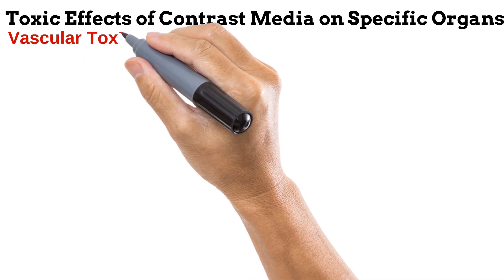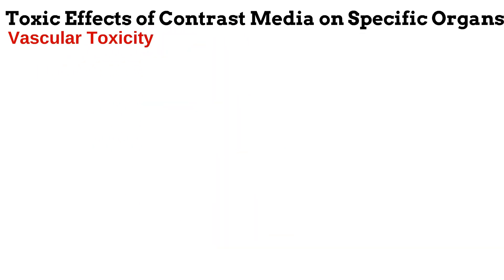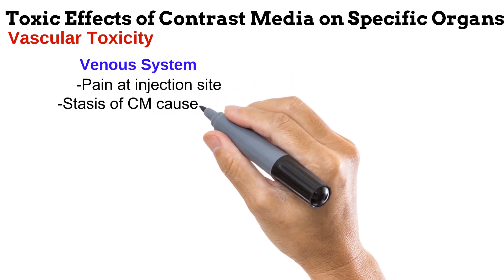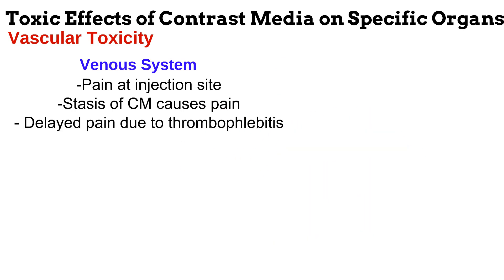We start out with vascular toxicity, which is the toxic effect of contrast media on the blood vessels. Contrast media can negatively affect the two main types of blood vessels, the veins and the arteries. Many contrast agents are given intravenously, through the veins, and pain can be experienced at the site of injection. Another toxic effect that contrast has on the venous system is stasis. Because the flow of blood is slow in the venous system, a stagnancy or stasis of the contrast media can occur — the contrast does not move through the vein and accumulates in one place. This would cause pain, and it commonly occurs in the veins of the arm.